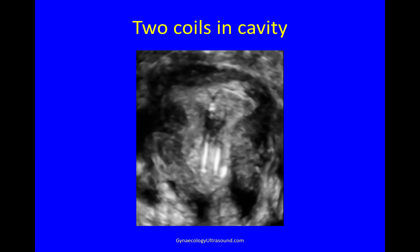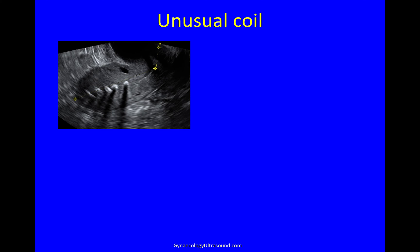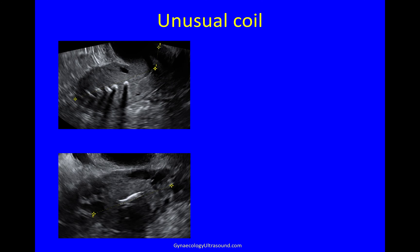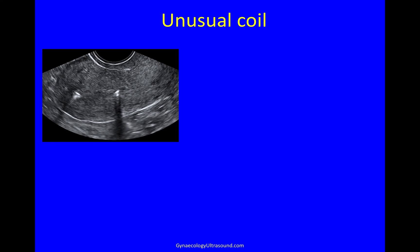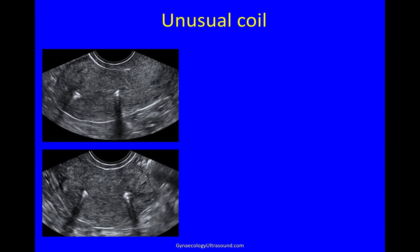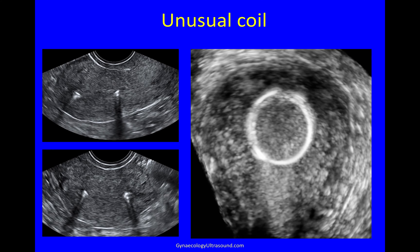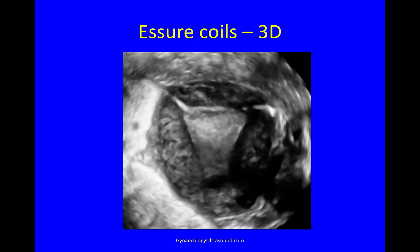Sometimes you see two coils in a single cavity, or unusual coils that are hard to identify on the transverse view. On 3D this is revealed to be a Lippes loop. In another case, the coil type was unclear, but 3D showed a metal circular coil — these are harder to remove. This is an example of Essure coils, small metal inserts into the interstitial portion of the fallopian tubes, whose position can be checked using 3D ultrasound.